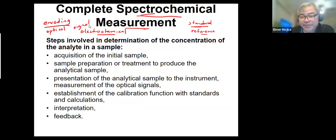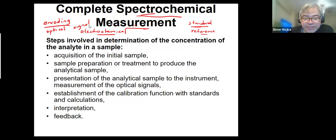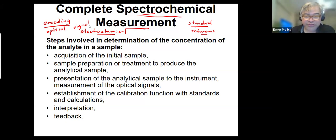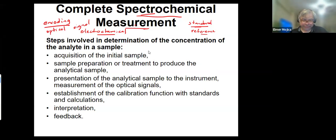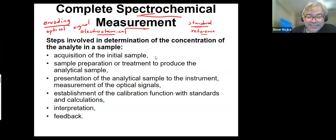If we have a spectrochemical method, we classify them according to the types of spectral information produced, and the principles of absorption, emission, luminescence, and scattering are going to be introduced. If we're going to have this spectrochemical determination or measurement, it involves many steps, and the steps are listed in this slide.